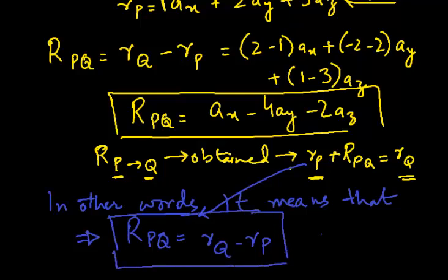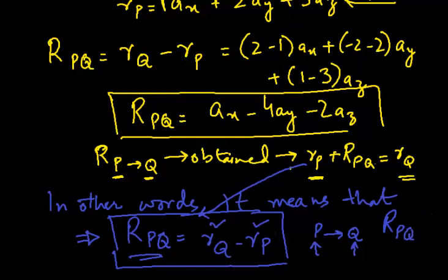We have to consider this equation throughout our course: whenever we want to find a vector from one point to another, for example from P to Q, it is that position vector minus the other position vector. The vector difference of r_Q minus r_P equals the vector r_PQ. I hope this is understood.